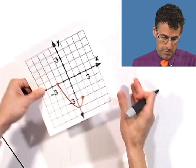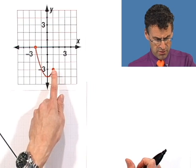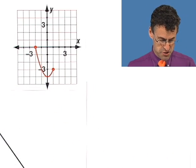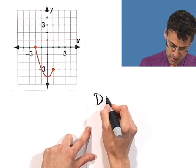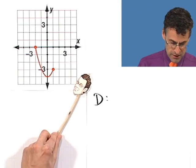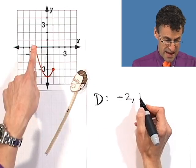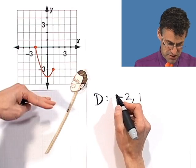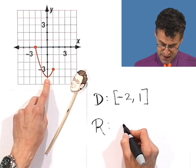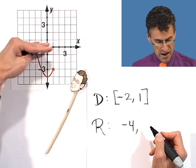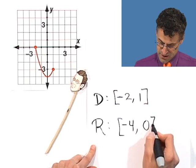One last one. Notice the difference here is that now I see these red dots, which means the holes are filled in — we include those points. So the domain goes from negative 2 all the way to 1, and now I'm allowed to use those endpoints. I write it as [-2, 1]. For the range, I hit everything from negative four all the way to zero; that highest point is y = 0 at ground level, and I'm allowed to include it. So the range is [-4, 0].